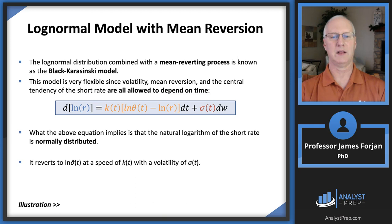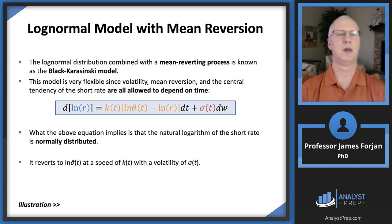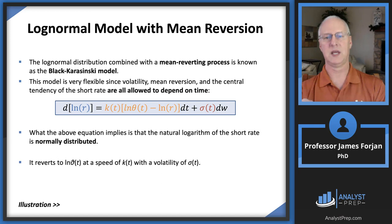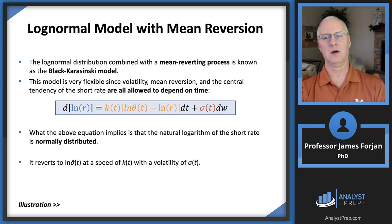We can add the mean reverting process into this log normal model — that's the Black-Karasinski model. What this allows is that volatility, mean reversion, and central tendency are all allowed to depend on time. If you look at that model equation, there are a bunch of t's in there illustrating the reliance on time. Note that the equation implies that the natural log of the short-term rate is normally distributed.